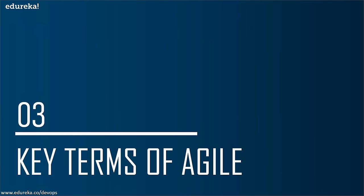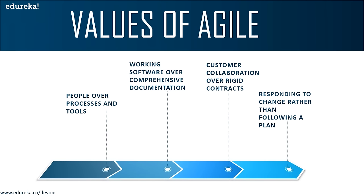The values of agile are: people over processes and tools, working software over comprehensive documentation, customer collaboration over rigid contracts, and responding to change rather than following a plan. The people-over-processes value gives you a development-centric and client-centric environment — just because you've been doing something traditionally for eight years doesn't mean you shouldn't explore other options. The model is people-centric, giving more importance to the development team, customers, and end users.